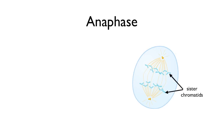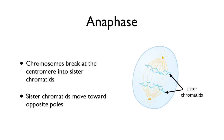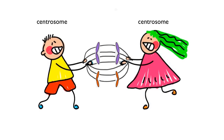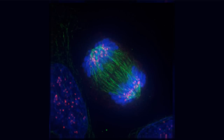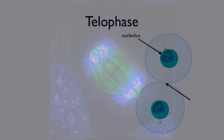In anaphase, we're going to have the separation. The chromosomes break at the centromere into the sister chromatids, and the sister chromatids move toward opposite poles of the cell. These new imaging techniques produce just amazing images of this separation.